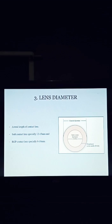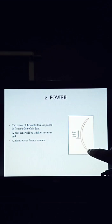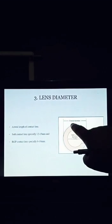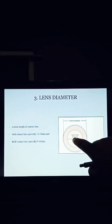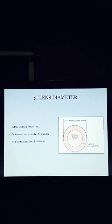Number 3: Lens diameter. Lens diameter means the total length of the contact lens. See the diagram — lens diameter means from here to here; this is the overall diameter, or total diameter. Overall diameter and total diameter are the same. The center of the contact lens is the optic zone. Soft contact lens and RGP contact lens diameter is different — soft contact lens diameter is 12 to 15 millimeters, and RGP contact lens diameter is 8 to 10 millimeters. The full form of RGP contact lens is Rigid Gas Permeable.